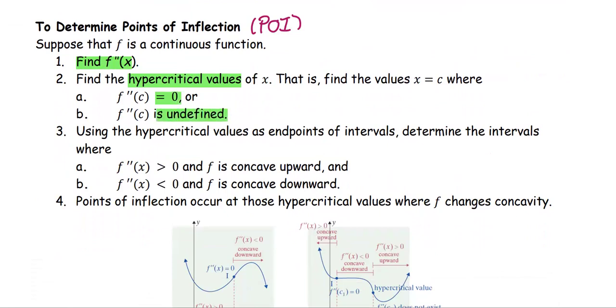Then use the hypercritical value as endpoints of the interval. Determine the interval where the second derivative is greater than 0, the function will be concave upward. If the second derivative is less than 0, the function f will be concave downward.